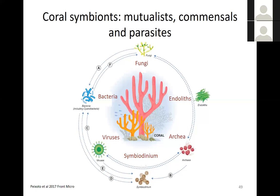Regarding symbiont transmission: you can find several different modes of transmission in corals overall, but for this particular species, it's horizontal. There's a part of the Symbiodinium life cycle that's in the water column, and new settlers take up Symbiodinium from the water column. So while the Symbiodinium is in the water column, there's certainly an opportunity for it to spread between reefs through currents. That would be the dispersal part of the life cycle.